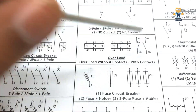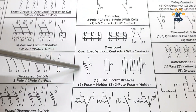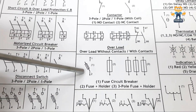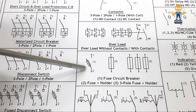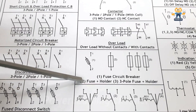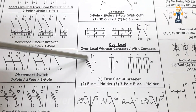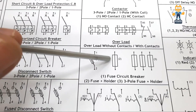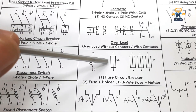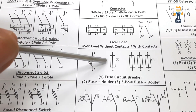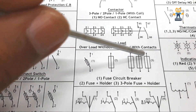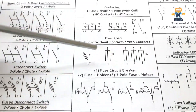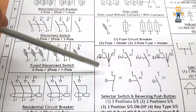Here we have the single-pole fuse circuit breaker symbol, and also the fuse holder symbol. This is a single-pole fuse plus holder, and this is the three-pole fuse with holder.